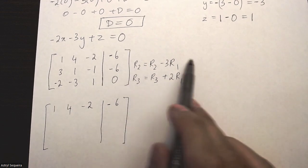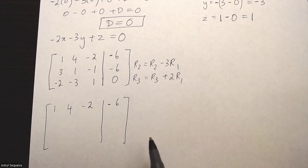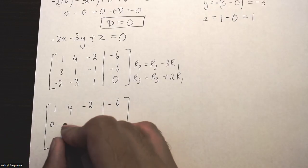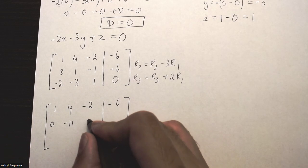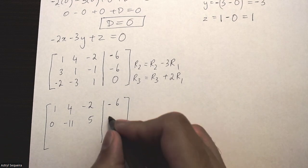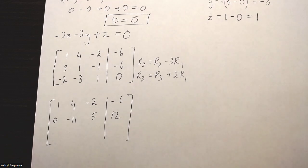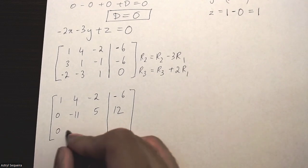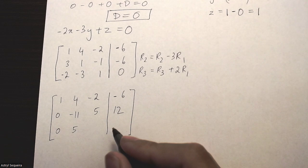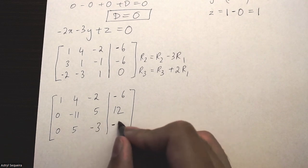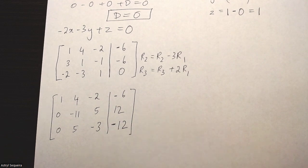So now I'm going to do this calculation here for my second row. I'll get 0, negative 11, 5, 12. And now the third row calculation, and I'll get 0, 5, negative 3, and negative 12.